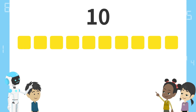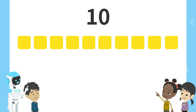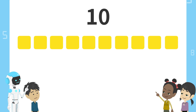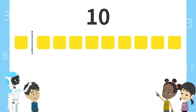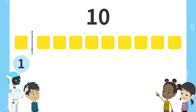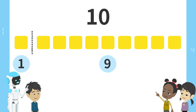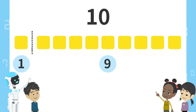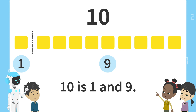Here are ten blocks. Yes. Now, let's split these blocks at various points. One block on the left and nine blocks on the right. Yes. We can say, ten is one and nine. Ten is one and nine.